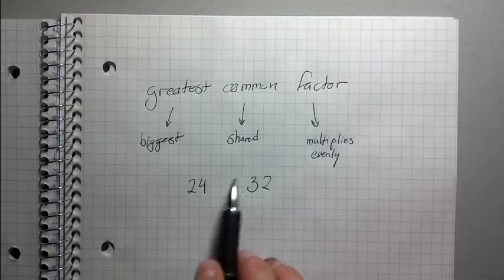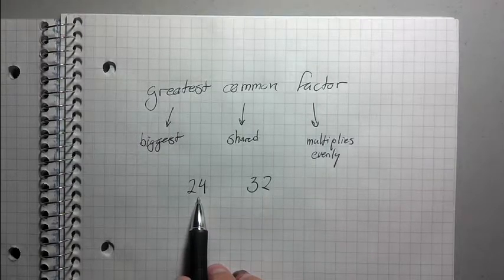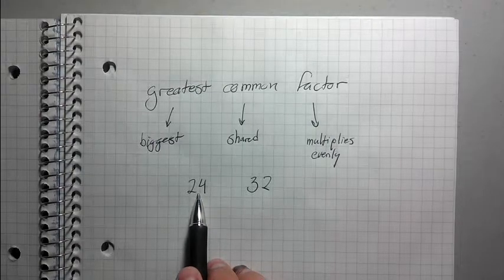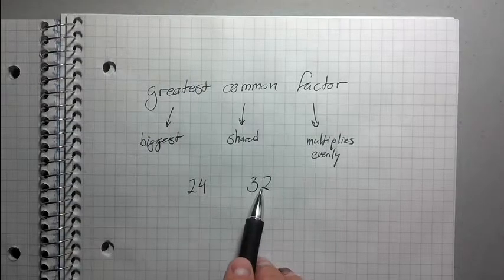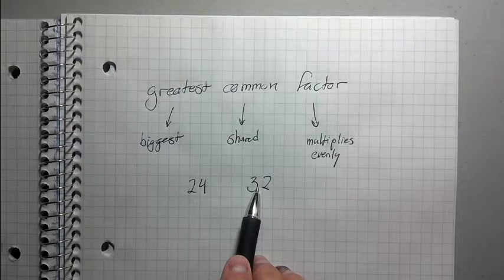Let's just think of some numbers in general that go into 24 and 32. Well, I know 12 goes into 24, right? But the problem is that can't be my GCF because 12 doesn't go into 32. Well, how about 4?